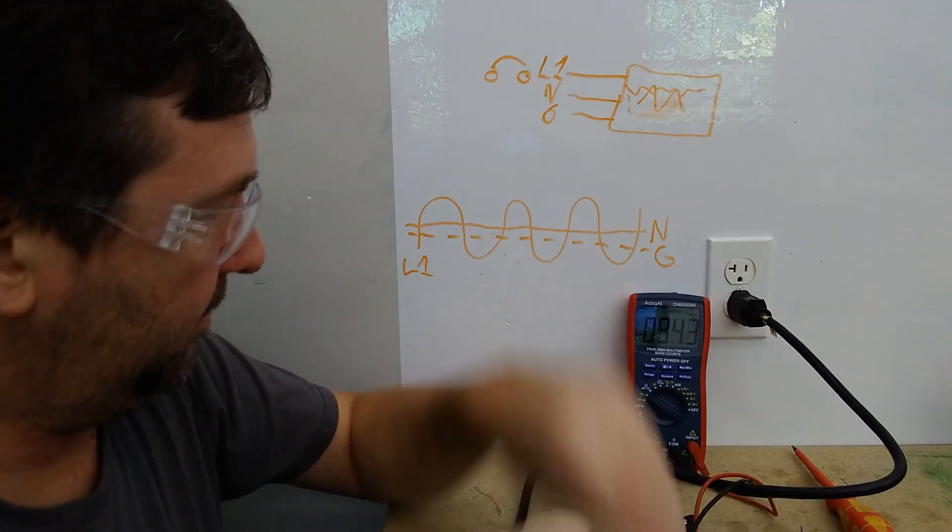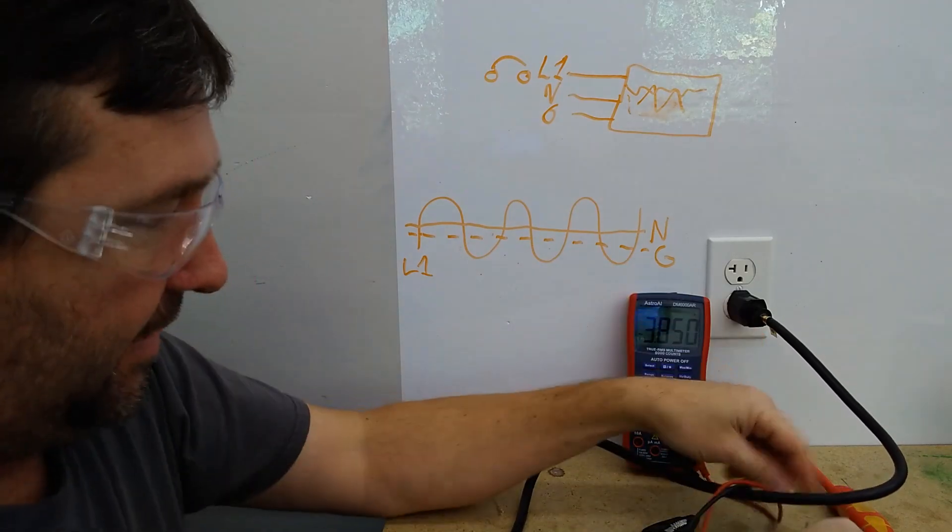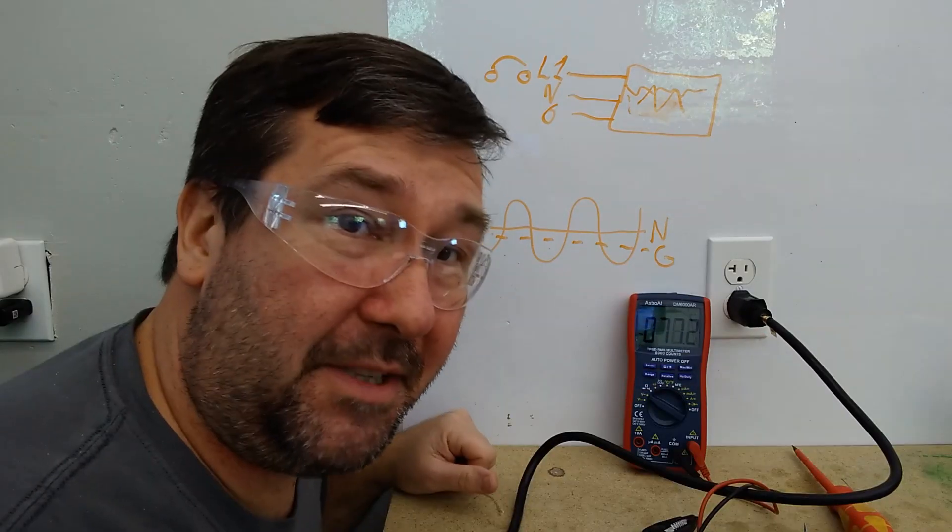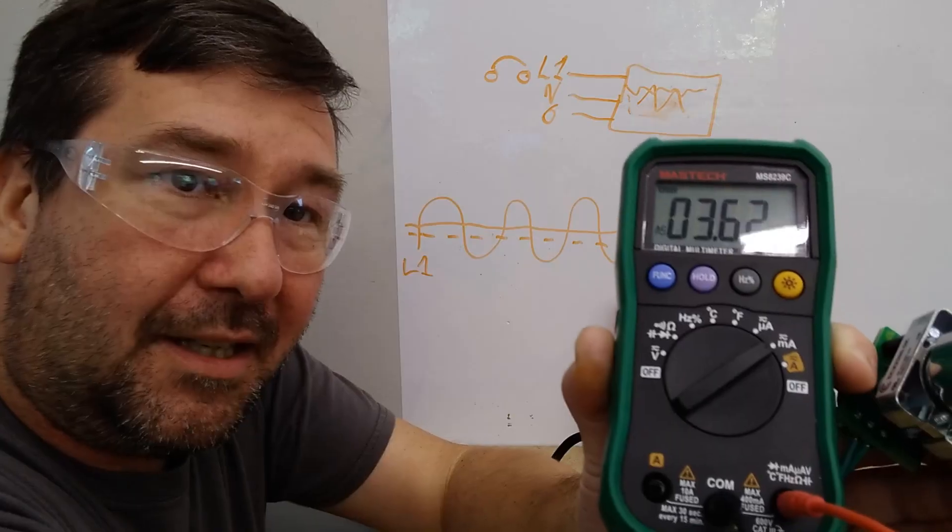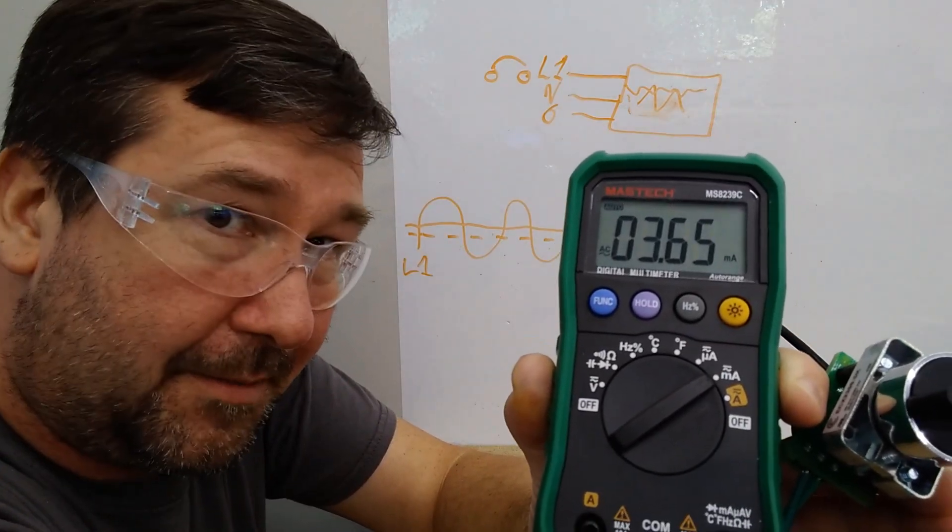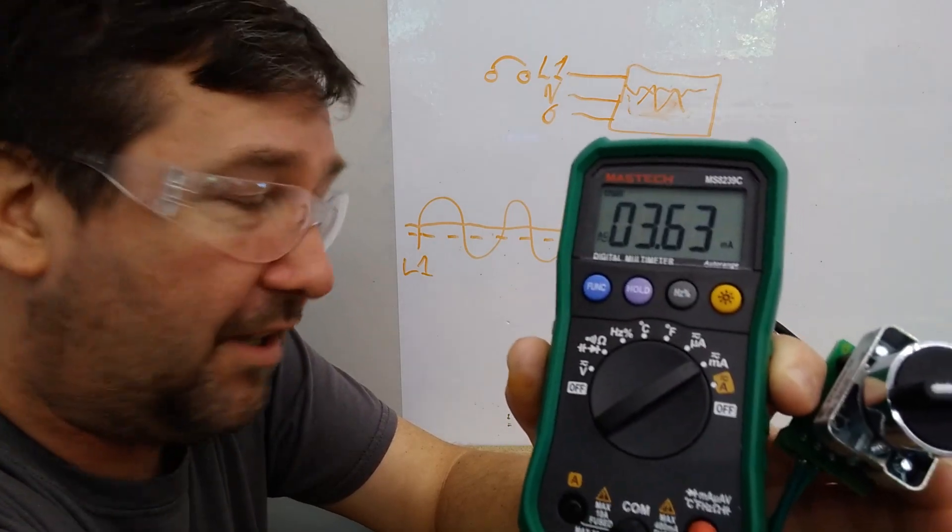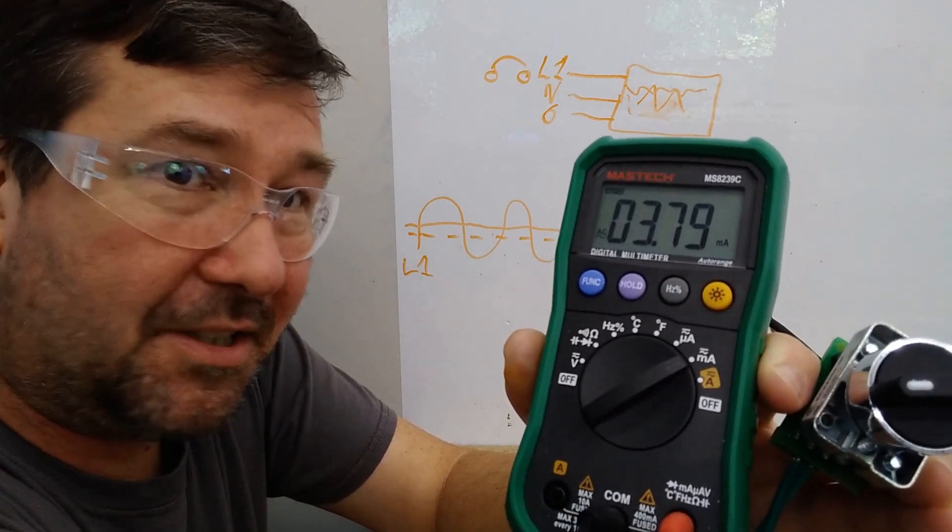And that 5 milliamps, let me unplug this. Notice that's at 77 millivolt. We did get 5 milliamps. Now it will stay here all day long. But the moment you go over that 5 mark, that's when it's going to trip.